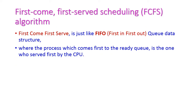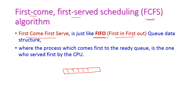The first algorithm is First Come First Served, that is FCFS. First Come First Served is just like FIFO — first in, first out queue data structure. The process waiting in the ready queue which comes first will be selected for executing first. This is the FCFS algorithm, where the process which arrives first to the ready queue is served first by the CPU.